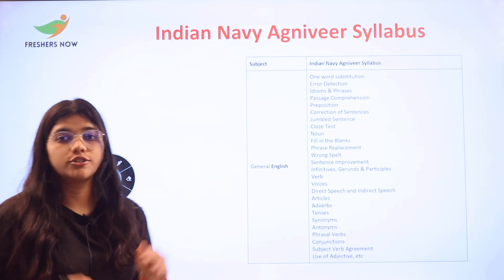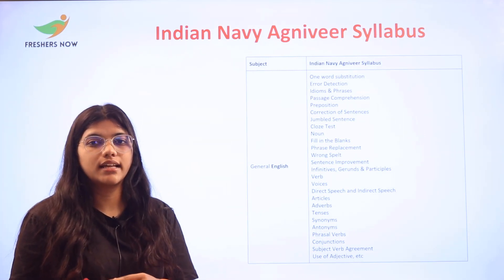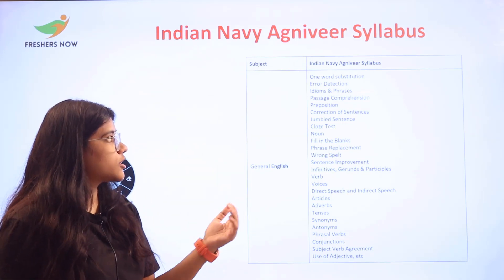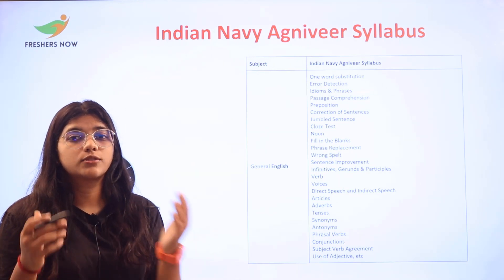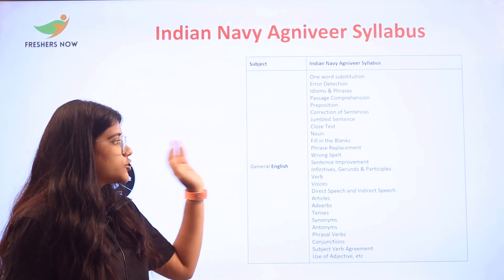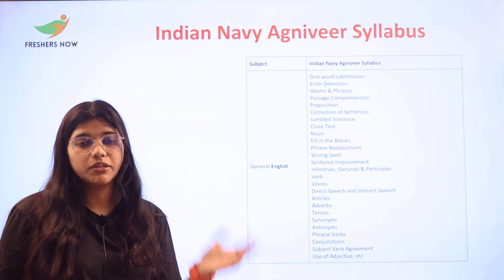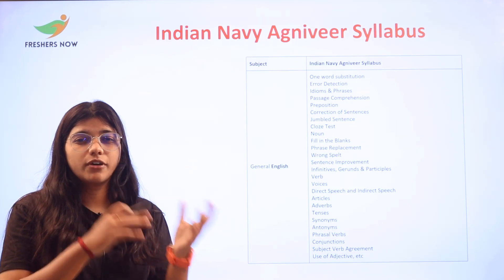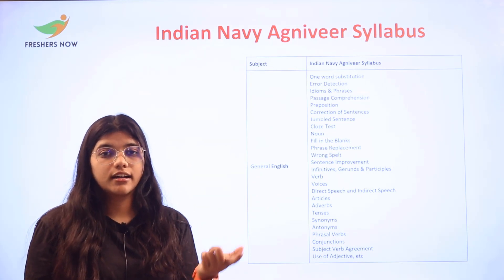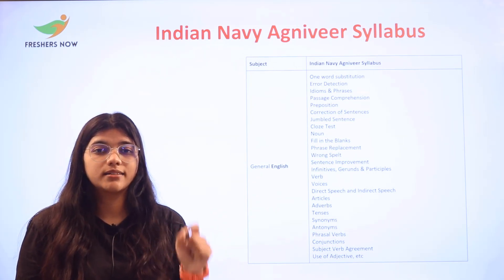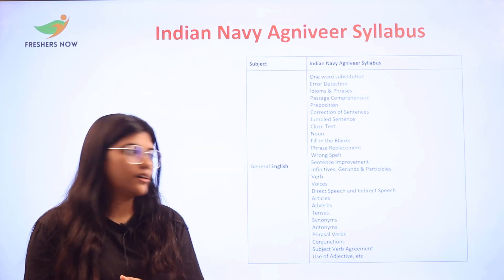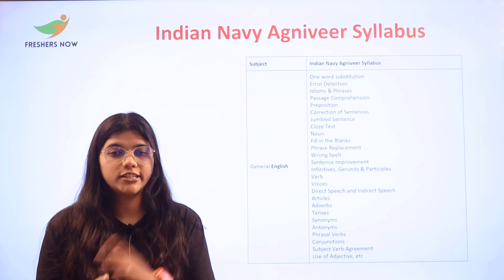Next, General English. In general English, we will focus on one-word substitution, error deduction, idioms and phrases, passage completion, sentence corrections, para jumbles, vocabulary, grammar, sentence infinitives, gerunds, participles, verbs, voices, direct and indirect speech, adverbs, nouns, and articles. For vocabulary, we will learn synonyms, antonyms, homonyms, one-word substitutions, and how to use adjectives, etc.